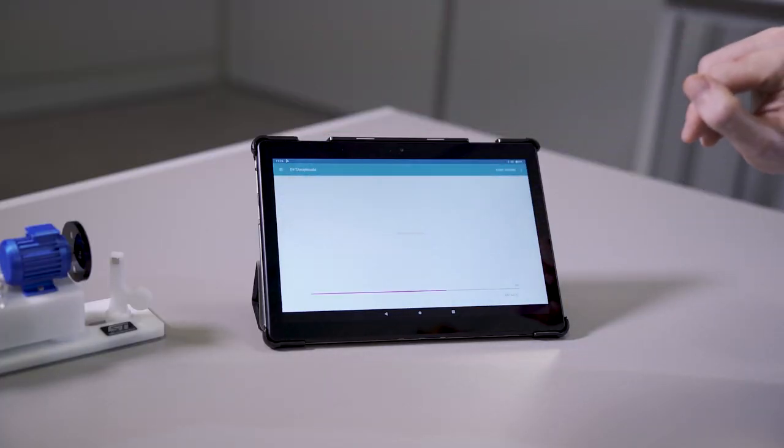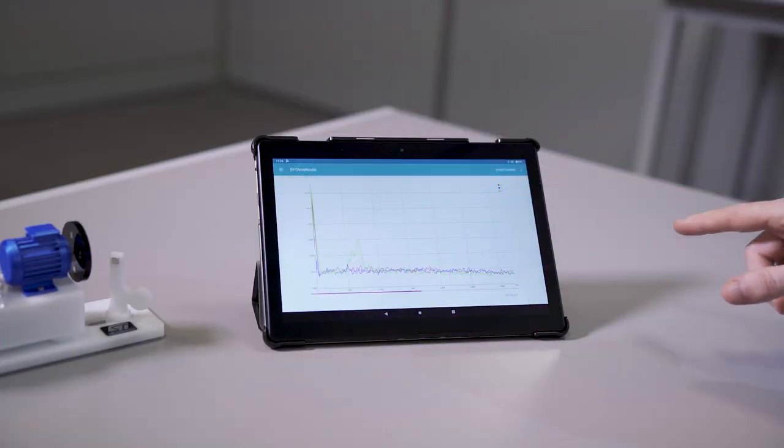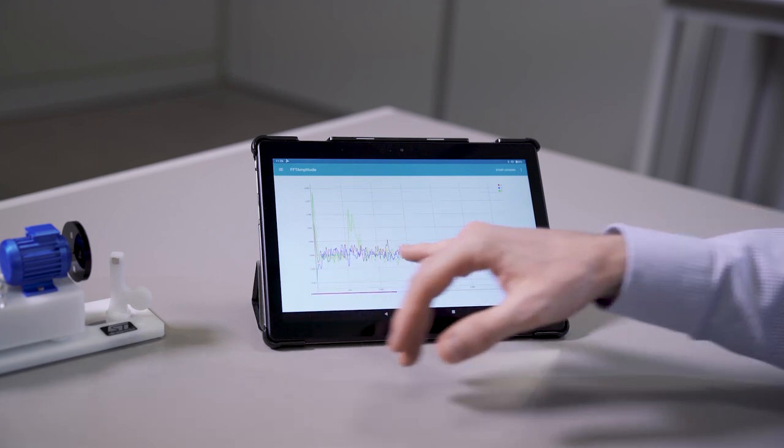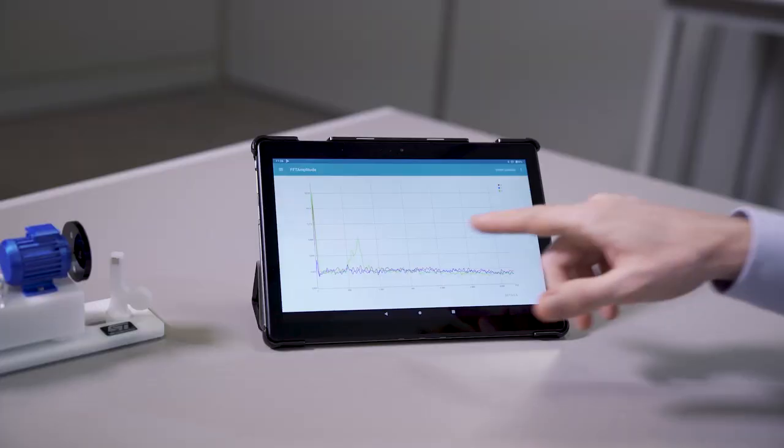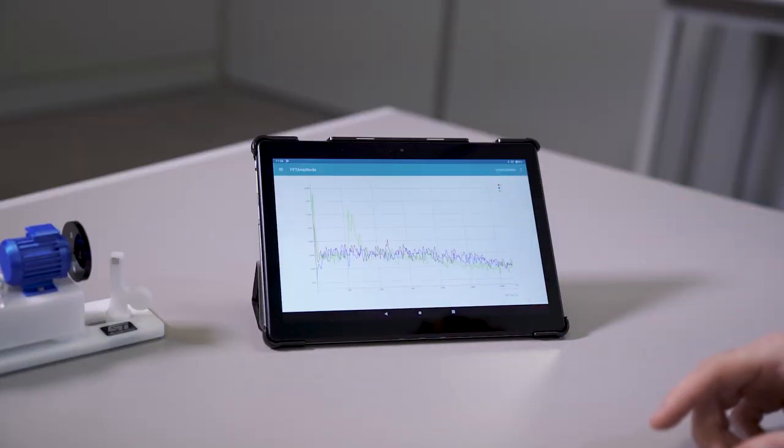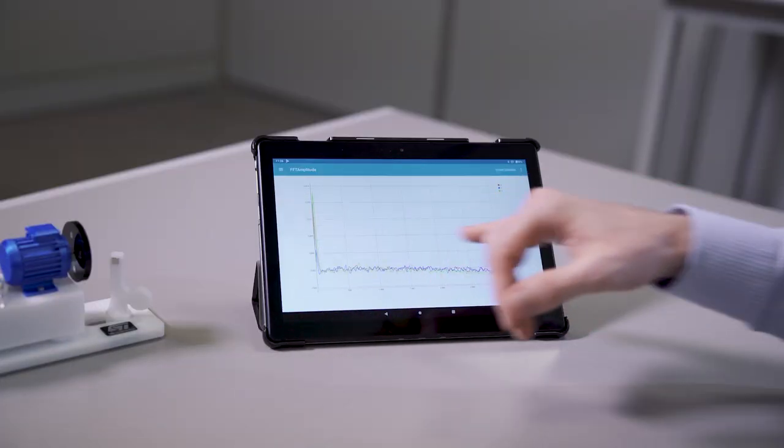In this section, we can monitor the spectrum of the accelerometer data. It's possible to tune also some parameters, both for the sensor and for the algorithm. As you can see here, the board is now processing the data and sending the resulting FFT to the app via Bluetooth.